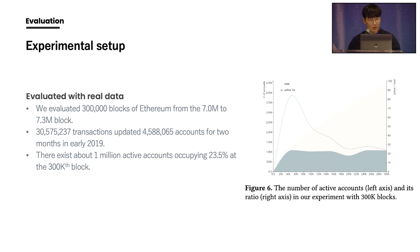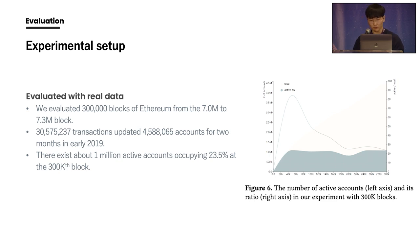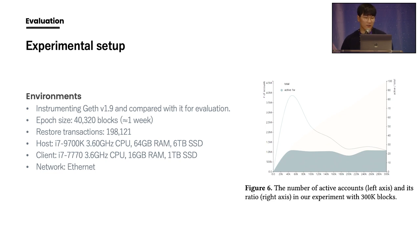This is the experimental setup. We evaluated with real Ethereum data — specifically 300,000 blocks from block 7 million to 7.3 million, covering 30.6 million transactions and 4.6 million accounts over two months in early 2019. About 1 million active accounts occupied 23.5% of the 300,000-block range. We instrumented Geth client version 1.9 to implement Ethanos and compared it with the original Geth. We set the epoch size to 40,320 blocks — approximately one week — and there were about 200,000 restore transactions.